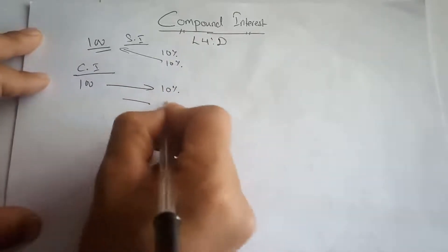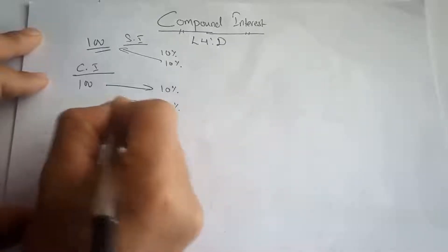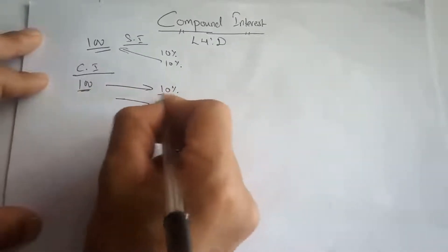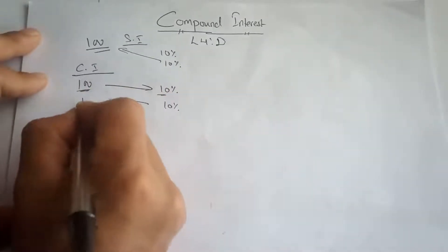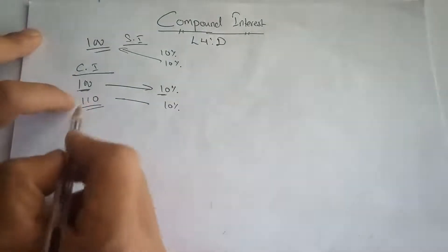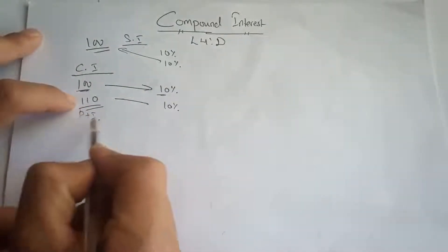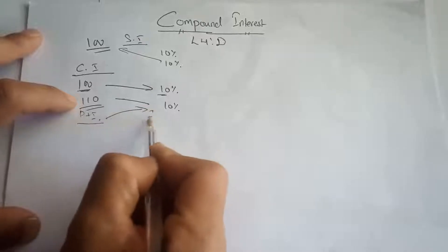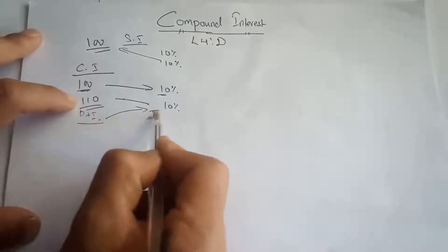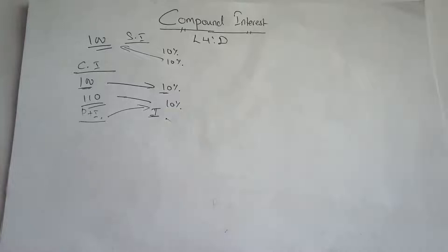In compound interest, 10% on 100 rupees gives 110 rupees — meaning all the principal plus interest. The interest charge is compound: the principal becomes the principal amount plus interest. So interest is earned on interest, and interest on interest continues.